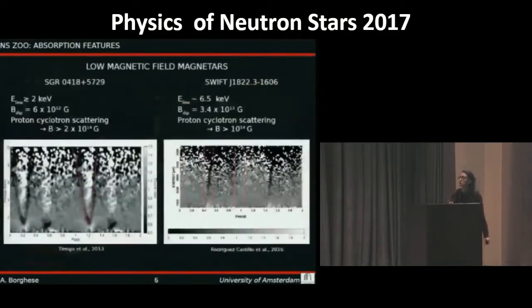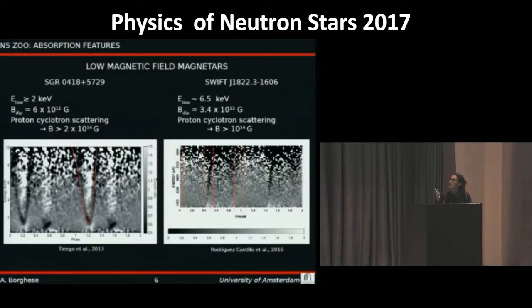A few years ago, phase-dependent absorption features have been discovered in two low magnetic field magnetars: SGR 0418 and Swift J1822. For the first case, the energy of the line is above 2 keV and for the latter case the energy of the line is about 6.5 keV.